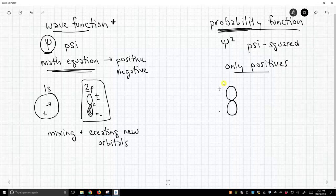Note that both lobes are positive. This is not the wave function for a 2p orbital. This is the probability function, the psi squared.